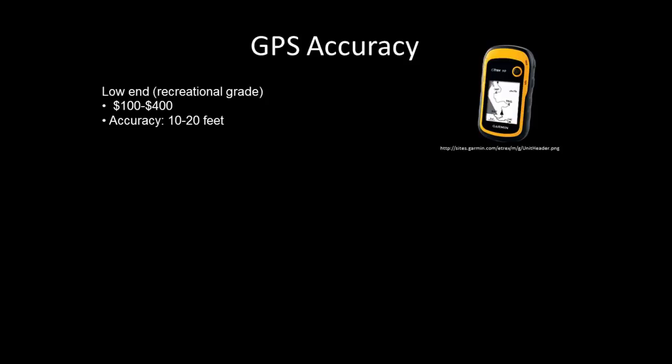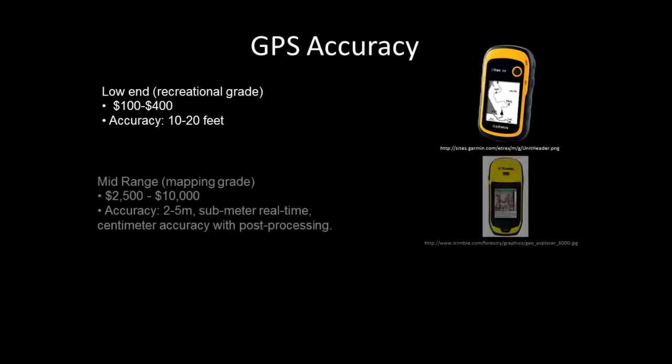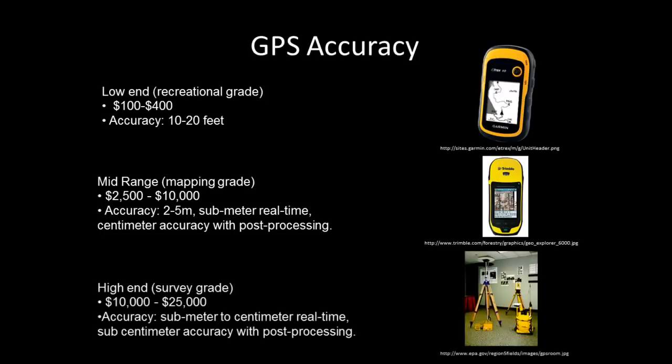The second type are what are known as mapping grade. These are somewhat more expensive units and are designed for geographic information system or GIS type mapping applications. The final type are high-end, survey grade GPS receivers. These types are very expensive and designed for precise surveying applications where sub-centimeter accuracy is of vital importance. For example, surveying the location of a bridge or road that may have life or death consequences if it is not surveyed precisely and accurately.